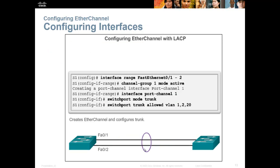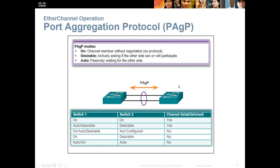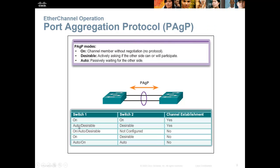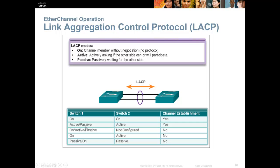This is all there is to configuration — one command: channel-group 1 mode active. Once you activate the channel group, you have to tell it what mode it's going to be in. Because this says active, if you go back, active is a setting for LACP — so active is not a setting for PAGP. The settings are different: you have auto and desirable for PAGP, and active and passive for LACP. So if you set it for active or passive, it's going to be LACP.